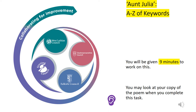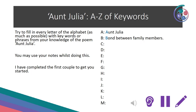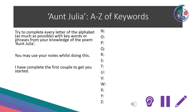For our next revision task, we are going to think about the A to Z of key words in Aunt Julia. You're going to be given nine minutes to work on this and you may look at your copy of the poem. Try to fill in every letter of the alphabet with key words or phrases from your knowledge of the poem. You may use your notes, and I've completed the first couple to get you started. Try and fill in as many as you can — it may not be possible for all of them, but try your hardest. Remember to pause the video so you can complete this.